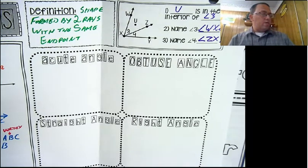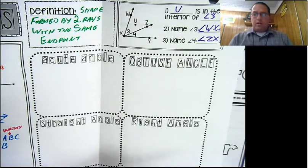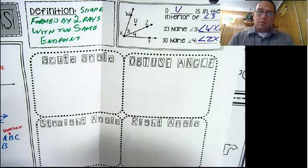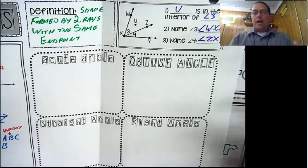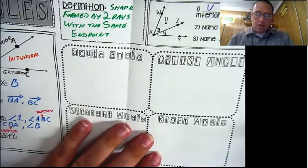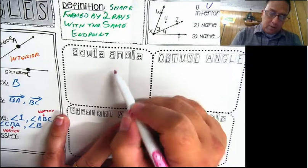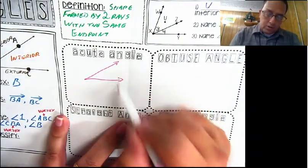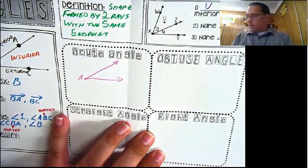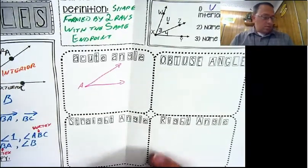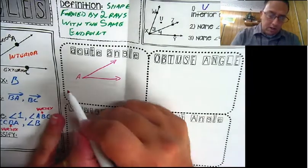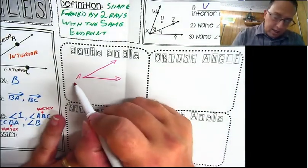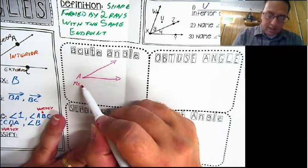Next, we're going to talk about how to classify angles. Angles can be classified by their degrees - how wide is the angle? First we have acute angles. An acute angle has a measure of less than 90 degrees, but still more than zero degrees.